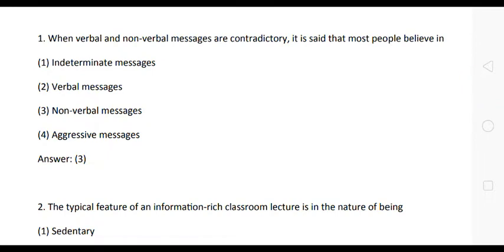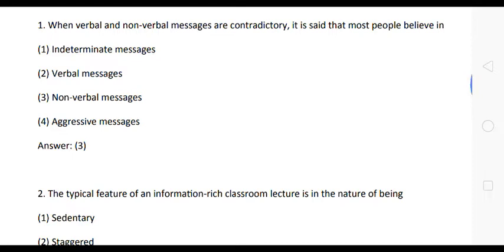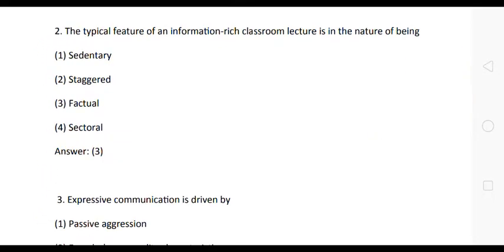Question 1: When verbal and non-verbal messages are contradictory, it is said that most people believe in — options: (1) intermediate messages, (2) indeterminate messages, (3) non-verbal messages, (4) aggressive messages. The correct answer is option 3: non-verbal messages.